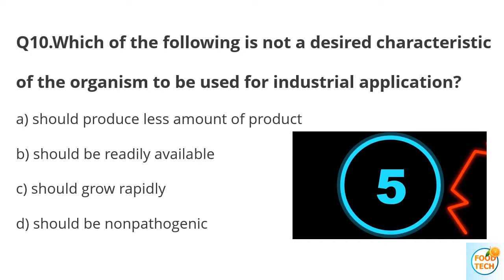Question 10. Which of the following is not a desirable characteristic of microorganisms to be used for industrial application? A. Should produce less amount of products. B. Should be readily available. C. Should grow rapidly. D. Should be non-pathogenic.